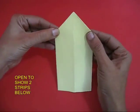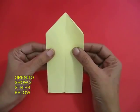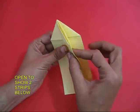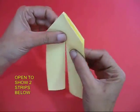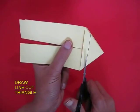Now you will see an arrow kind of shape. Fold this so that you can see two independent strips below and a triangle on the top.